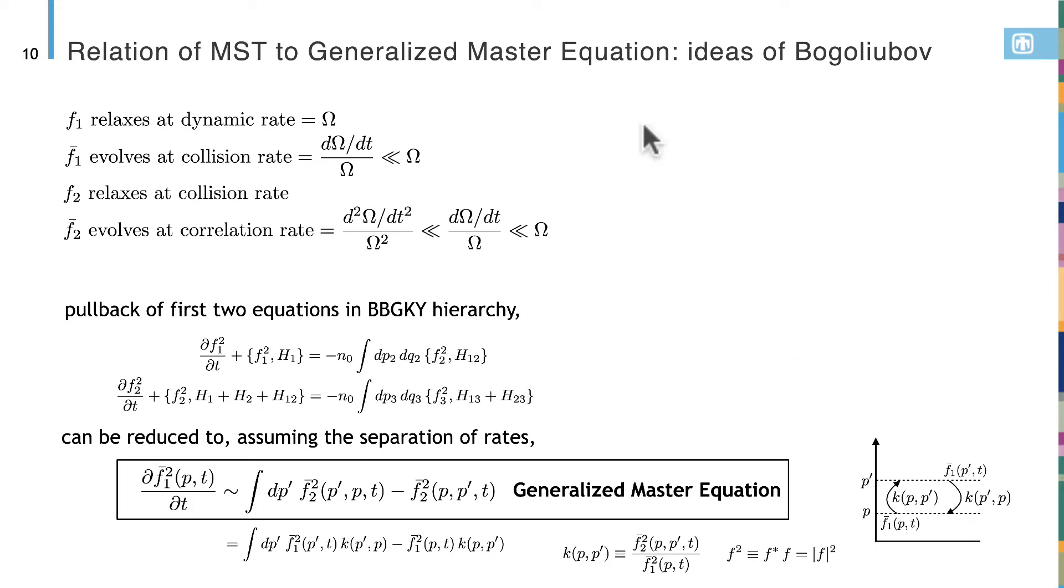We can now integrate all except little n particles or dimensions, and we end up finding that we still have this full derivative on the left hand side, but now we get a collision term with the n plus first particle - this is the BBGKY hierarchy. We now can, following the ideas of Bogolubov, get to a generalized master equation where F_1 relaxes at a dynamic rate omega, it evolves into a function F_bar of 1, which evolves at the collision rate, which is less than the dynamic rate. And then F_2 relaxes at this collision rate to F_2 bar, which evolves at the correlation rate, which is much less than the collision rate. The ratio of these is the correlation parameter. This is really an expansion in the weakness of correlation.